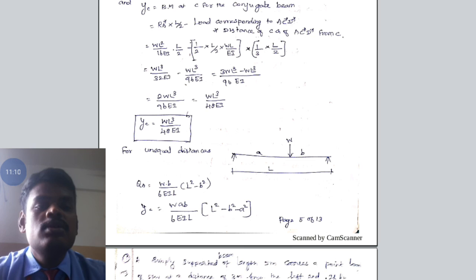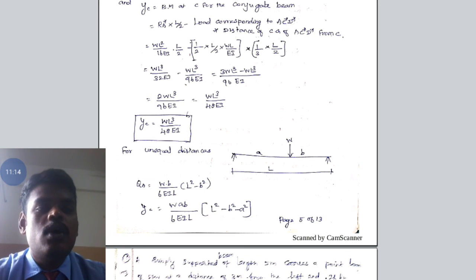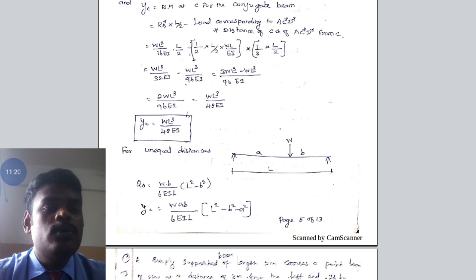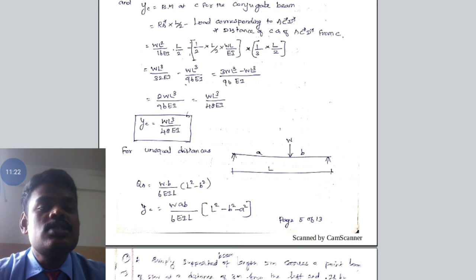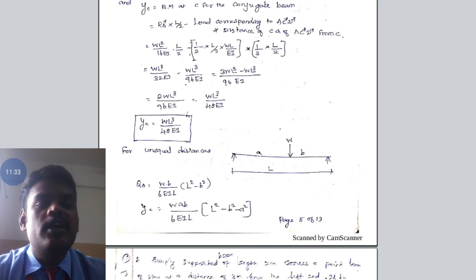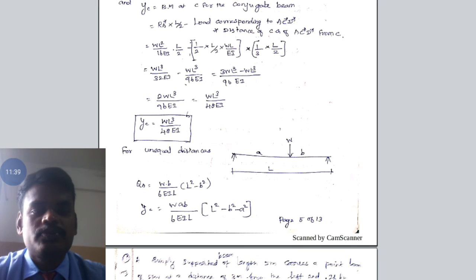Using the same steps, we can also find the slope and deflection of a simply supported beam when it is subjected to a load at an unequal distance from the ends. For example, when the load is placed at a distance 'a' from end A, we can calculate the shear force and bending moment diagrams of the conjugate beam to find the slope and deflection.